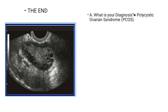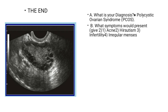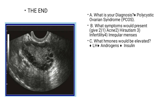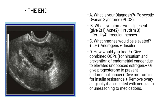For the case study answers: the diagnosis is polycystic ovarian syndrome. Symptoms that would present include acne, hirsutism, infertility, irregular menstruation, and pelvic pain. Hormones that would be elevated include androgens and insulin. Treatment includes COCs for oligomenorrhea and prevention of endometrial cancer due to unopposed estrogen, progesterone to prevent endometrial cancer, metformin for insulin resistance, and laparoscopic ovarian drilling if associated with infertility, plus lifestyle modification.